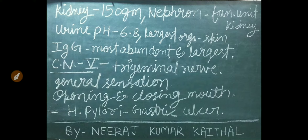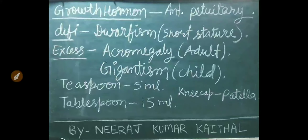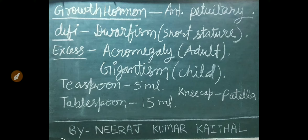Helicobacter pylori is responsible for gastric ulcer. Growth hormone is secreted by the anterior pituitary. Its deficiency causes dwarfism. If secreted in excess amount, it can cause acromegaly in adults and gigantism in children.